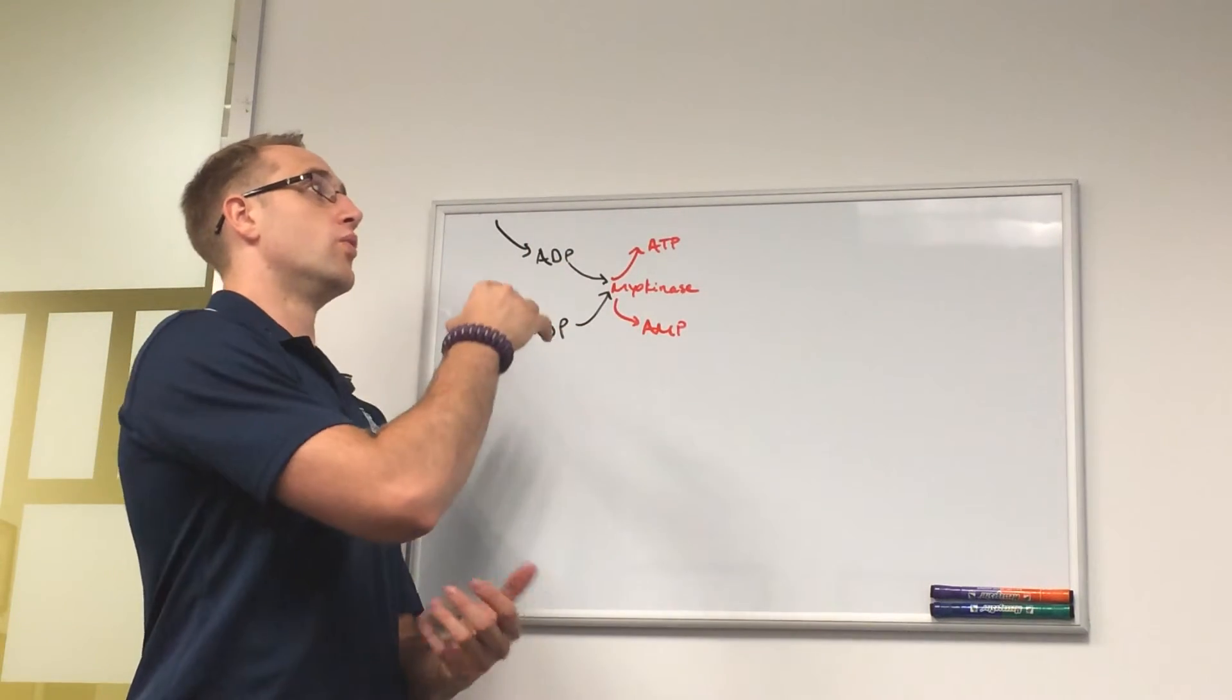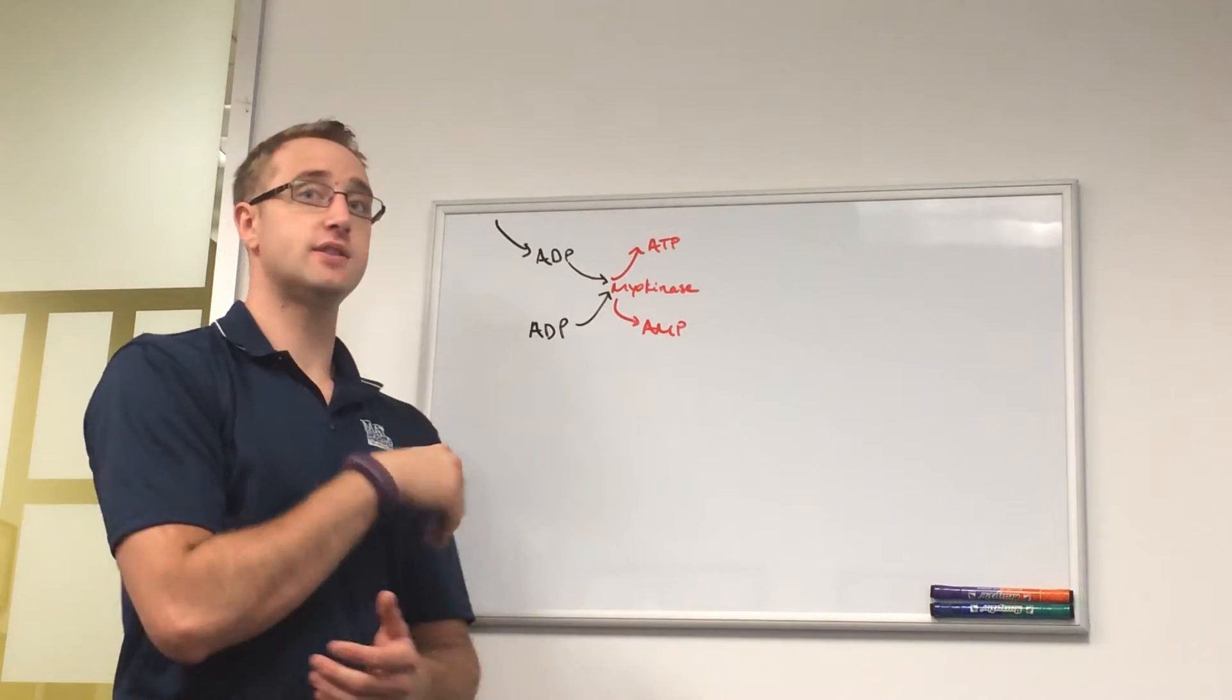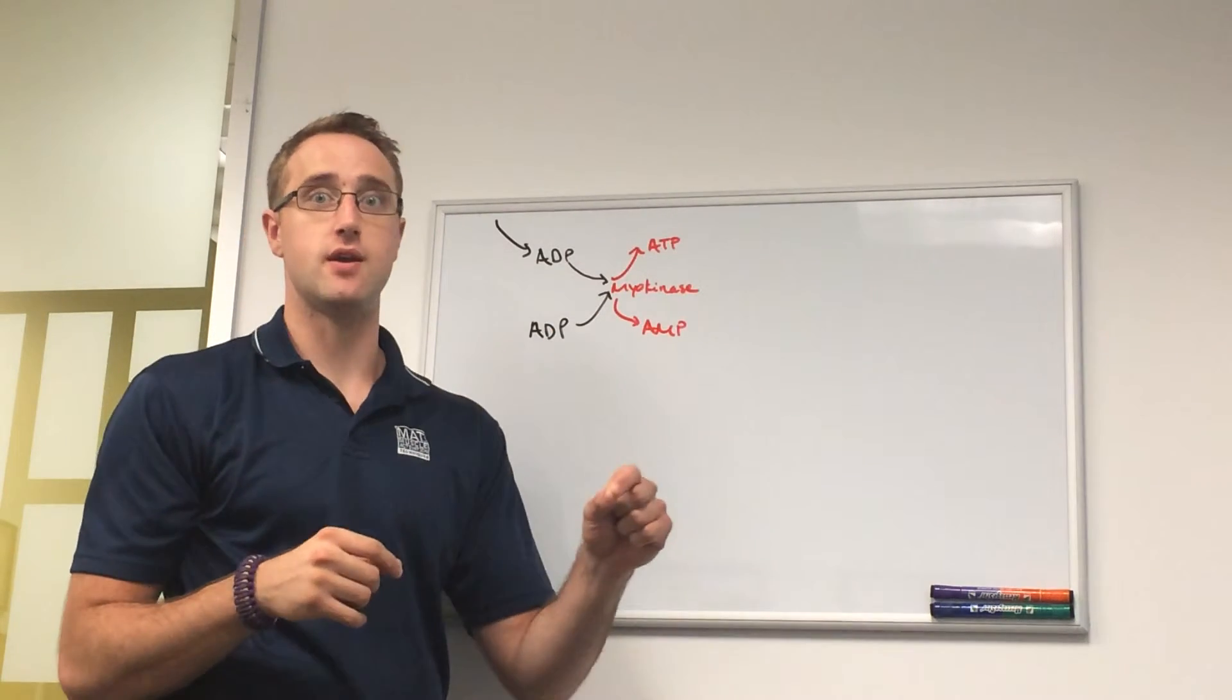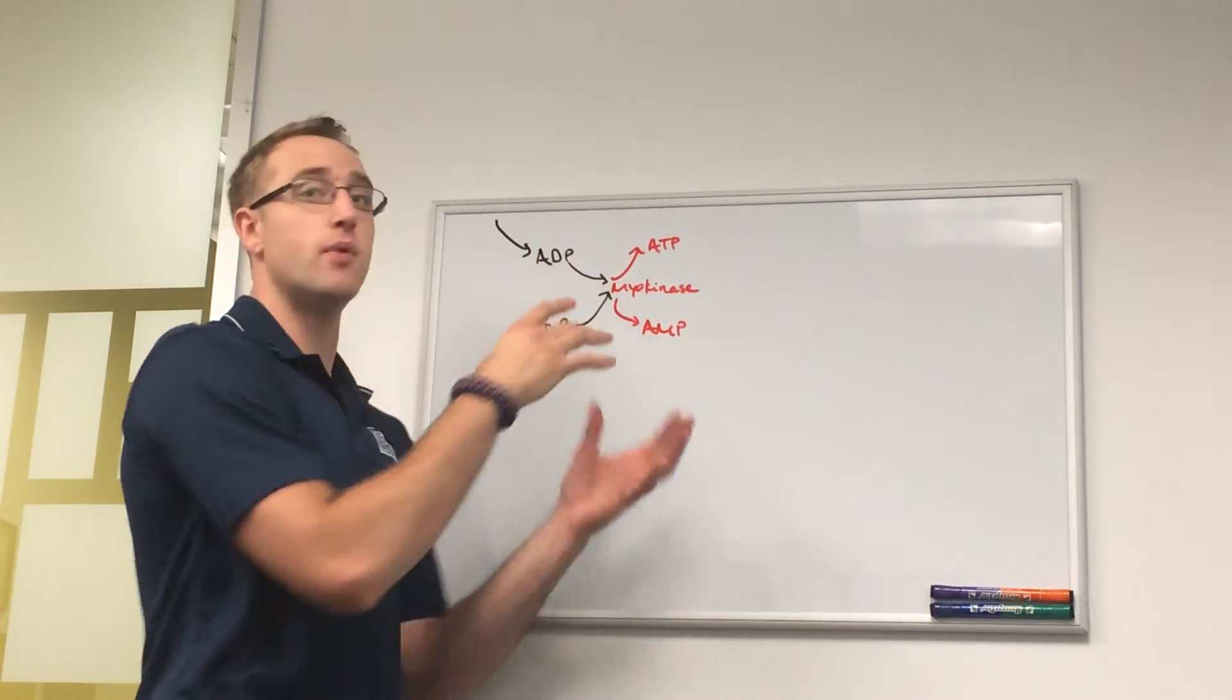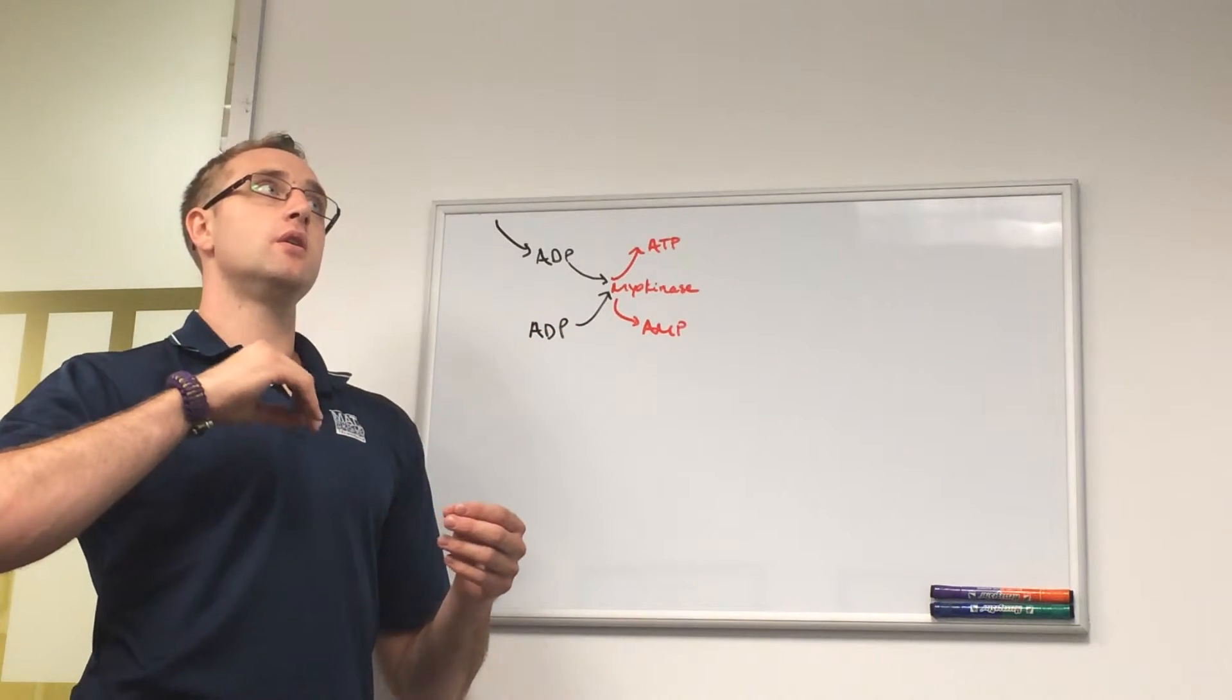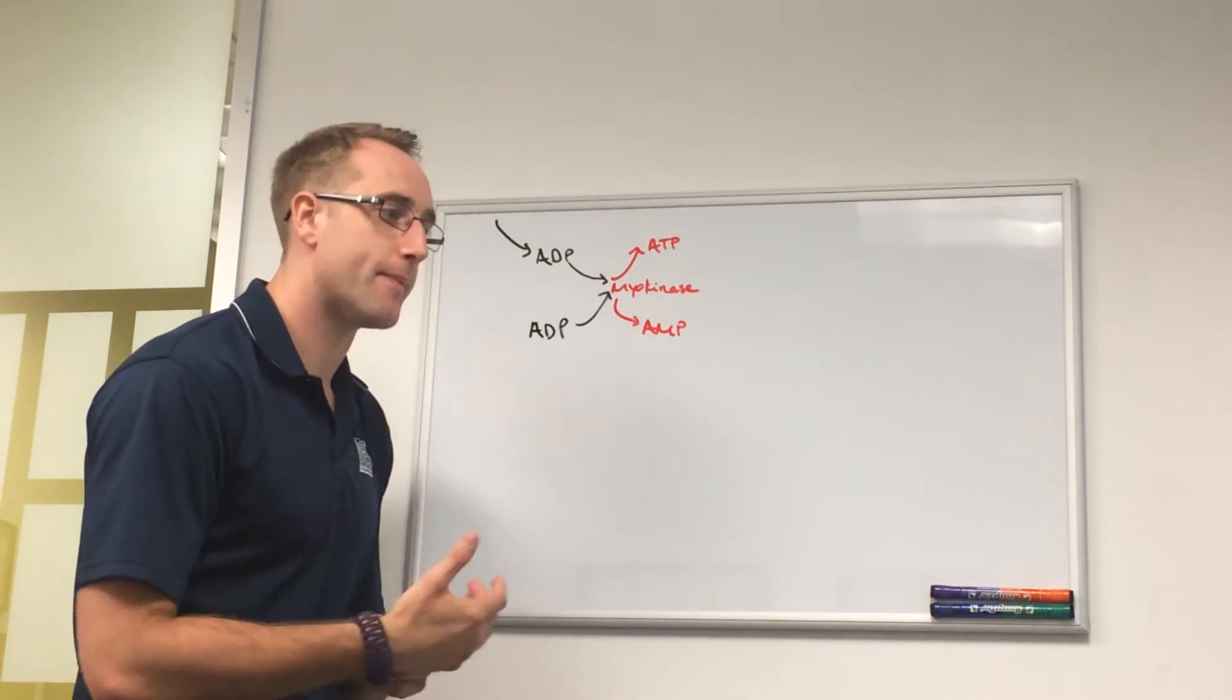When this cross-bridging process happens, ADP is ejected from the myosin head. This ATP is broken into ADP and P, and they both end up being ejected from the myosin head. So the frequency with which this cross-bridging and uncross-bridging process happens.